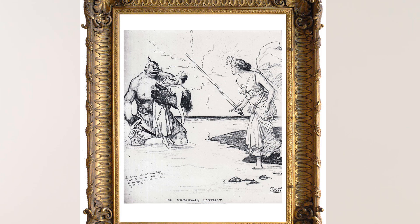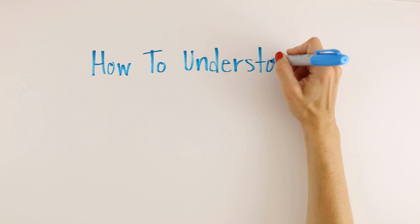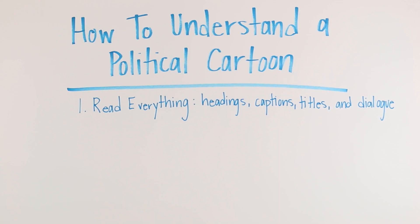Political cartoons aren't always easy to interpret. They use symbolism and often have hidden information. Here is a simple three-step process you can use to understand any political cartoon.